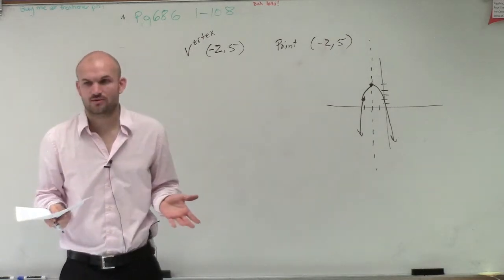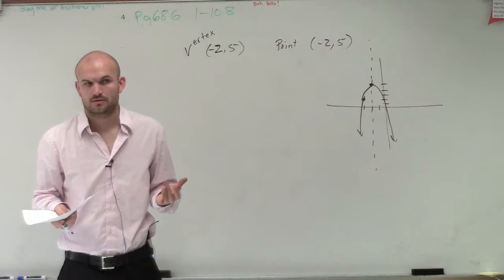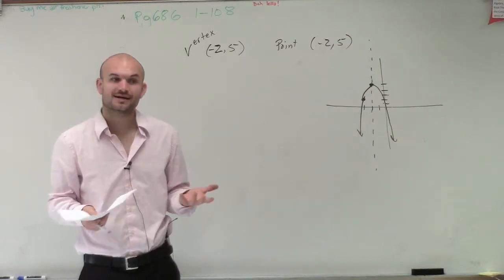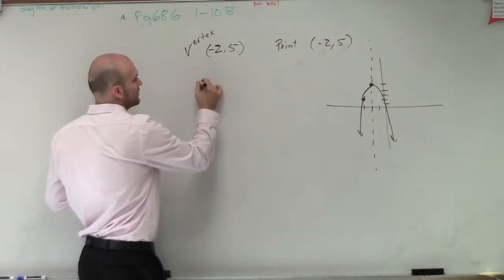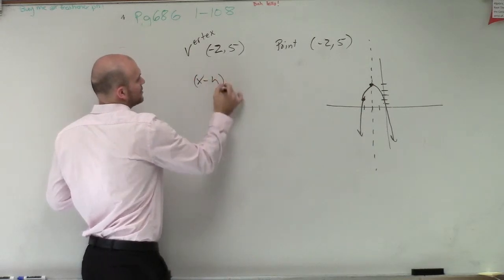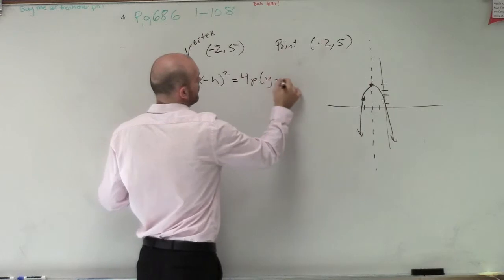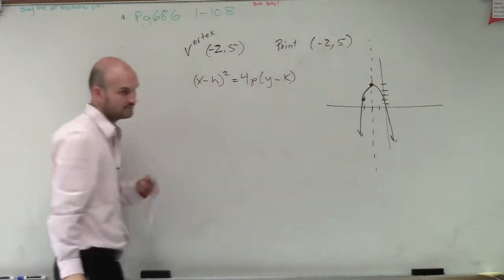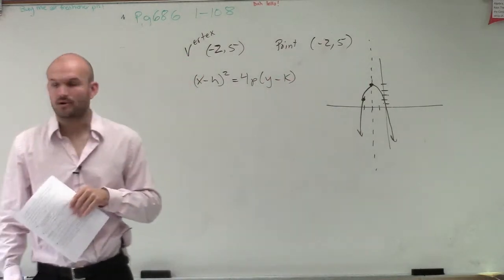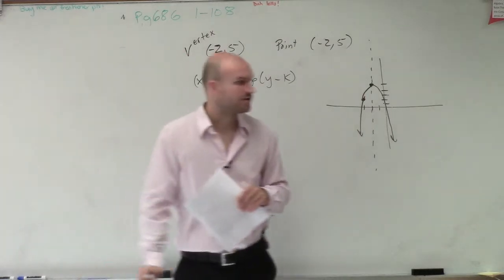what has to be squared, the x or the y? X squared, right? So therefore, we can write the equation x minus h squared equals 4p times y minus k. Remember, that was our formula for a parabola. It's also written over there in our formula section.